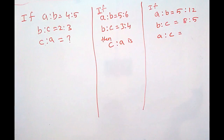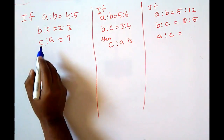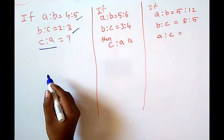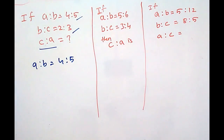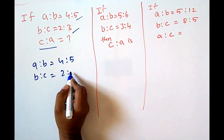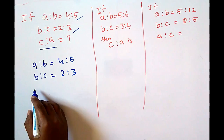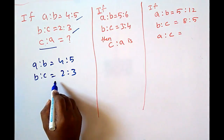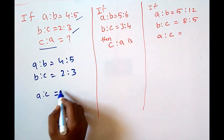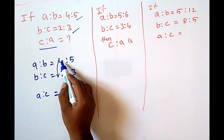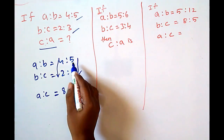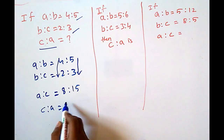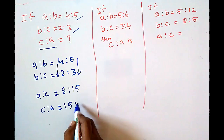This is an RRBJE 2015 question. Here A to B is given and B to C is given; we have to find C to A. A is to B is 4 is to 5, and B is to C is 2 is to 3. We have to find C to A. A to C is found by multiplying numerators and denominators: 4 × 2 = 8, 5 × 3 = 15. So A to C is 8 to 15. C to A is the reverse: 15 is to 8.